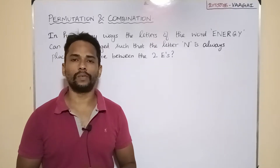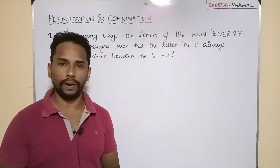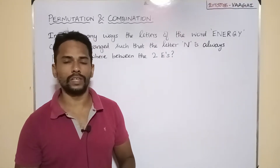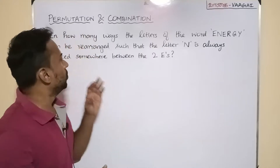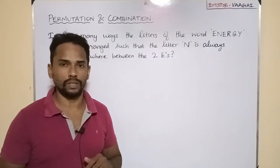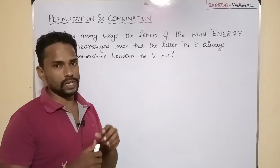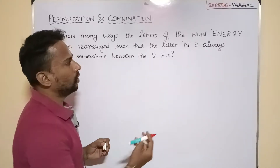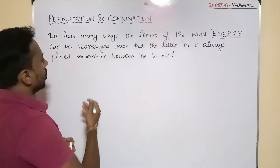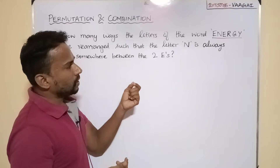Hello dear friends, welcome back once again to our channel Vakey Academy of Mathematics. This session we have an interesting question from the concept of permutations and combinations. Let's directly get into the question: in how many ways can the letters of the word ENERGY be rearranged such that the letter N is always placed somewhere between the two E's?